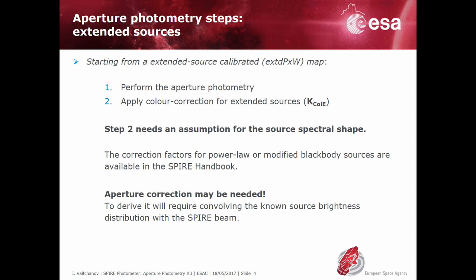Performing aperture photometry for extended sources is somewhat simpler. One can start directly from the extended source calibrated maps in units of mega-Jansky per steradian and measure the integrated intensity within the selected aperture. For extended sources, neither the beam nor the aperture correction are applicable — only the color correction is necessary. This is tabulated in the SPIRE handbook. Note that the color corrections are different for point sources and for extended sources. For extended sources an aperture correction may still be needed, but the SPIRE beam-derived aperture corrections are not applicable for extended sources with an arbitrary spatial distribution.